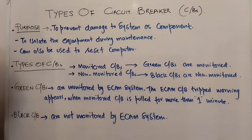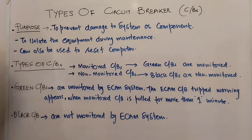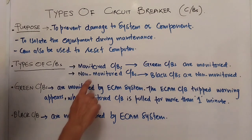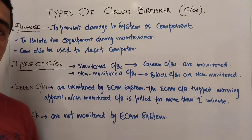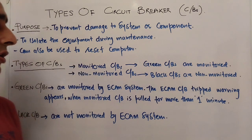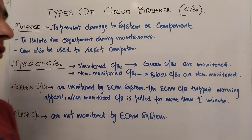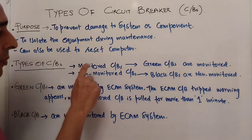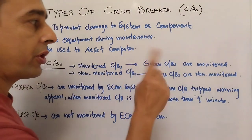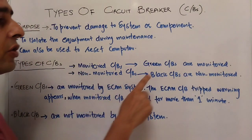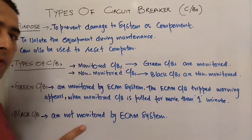Now, how many types of circuit breakers are there? Circuit breakers are basically of two types: monitored CBs and non-monitored CBs. If you go to an A320 cockpit, you can see circuit breakers that are either black or green. Monitored CBs are green, and non-monitored CBs are black.